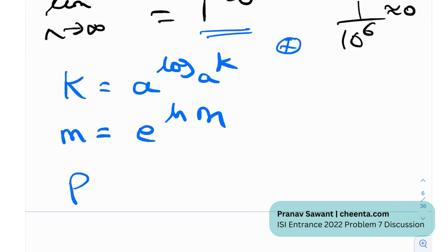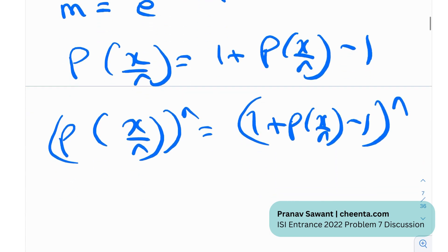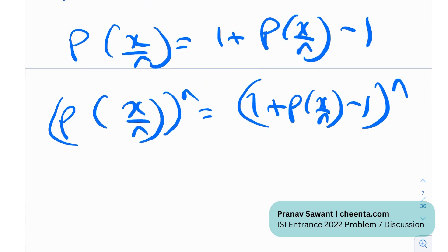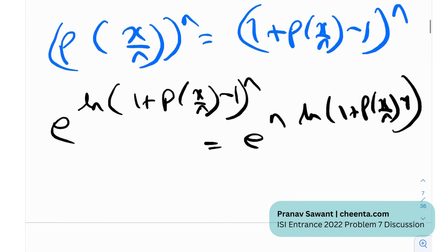Now, first we observe that P(x/n) can be written as 1 plus (P(x/n) - 1). This seems actually quite trivial, but let's see how this helps us. Now, [P(x/n)]^n would be equal to [1 + (P(x/n) - 1)]^n. And now, I want to write this in the exponential form as I had shown you earlier. So, this quantity can be written as e raised to the power ln[1 + (P(x/n) - 1)]^n, which is nothing but e raised to the power n·ln[1 + (P(x/n) - 1)].